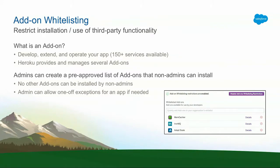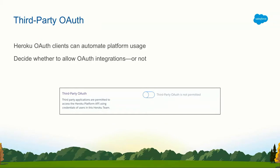You can also make exceptions to this if need be. We allow you to turn on or turn off third-party OAuth — these are third-party connections to your Heroku account that allow you to automate your use of Heroku. Maybe that's not something you want to allow in your organization. You can switch that off for the whole enterprise account and it applies to all users.